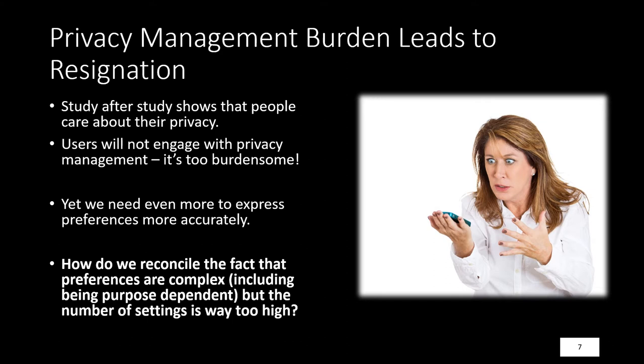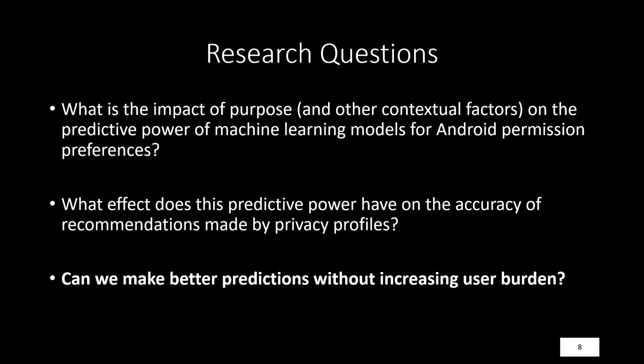This raises a fundamental question: how do we reconcile the fact that preferences are complex, including being purpose-dependent, and even without purpose, the number of settings is already unrealistically high? This led to the research questions in our study. First, what is the impact of purpose and other contextual factors on the predictive power of machine learning models for Android permission preferences? Second, what effect does this predictive power have on the accuracy of recommendations made by privacy profiles? And finally, can we make better predictions without increasing user burden?